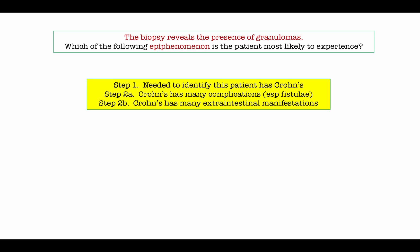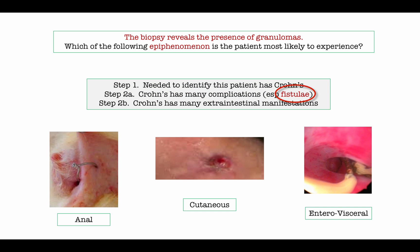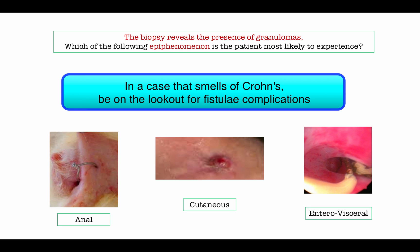Answering this question required a couple of steps. On the boards, they assume you can establish the diagnosis, then they launch questions on complications and extra-intestinal manifestations. One favorite topic is fistulae. Sometimes it's obvious — a patient with abdominal pain, chronic diarrhea, and an anal fistula is classic Crohn's. Likewise, a patient with an enterocutaneous fistula. The tricky ones are when they put air, stool, or microbes in the bladder or vagina — students rarely recognize these. In a case that smells like Crohn's, be on the lookout for fistulae and derivatives.